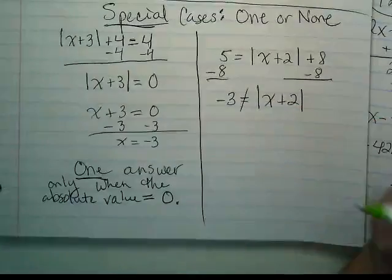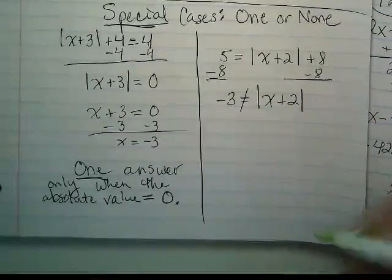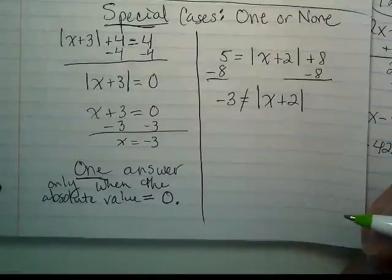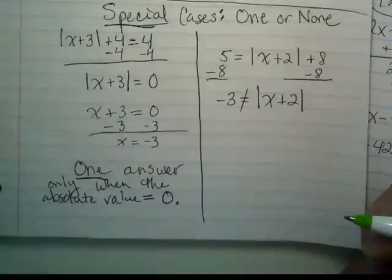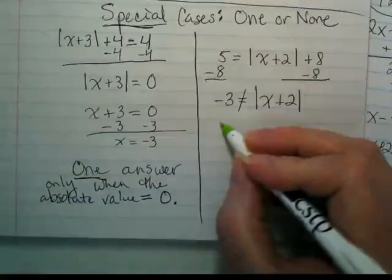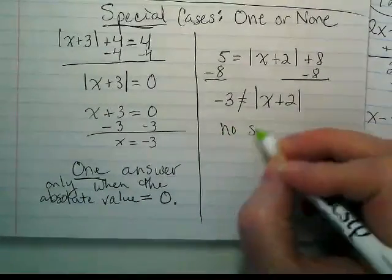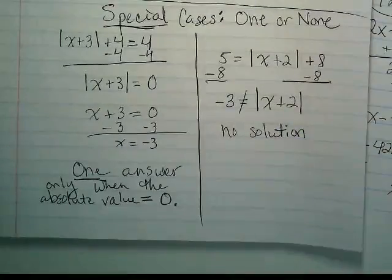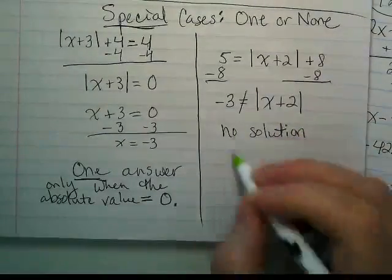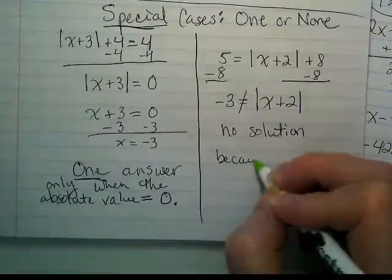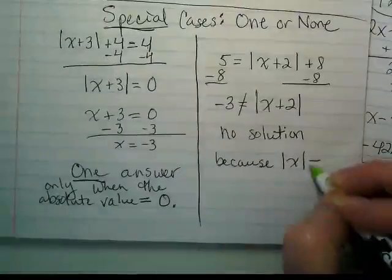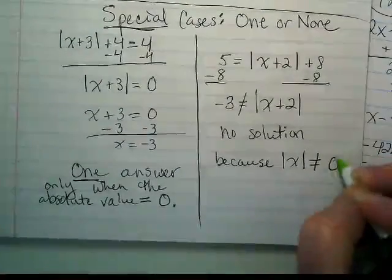Well, that's not true. No absolute value is going to ever be equal to any negative number. So we call this no solution.